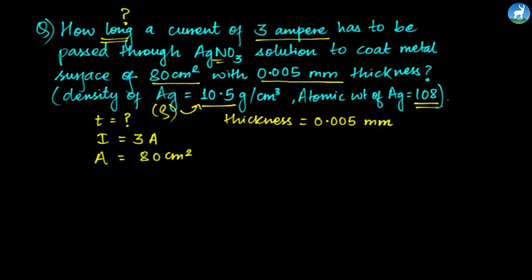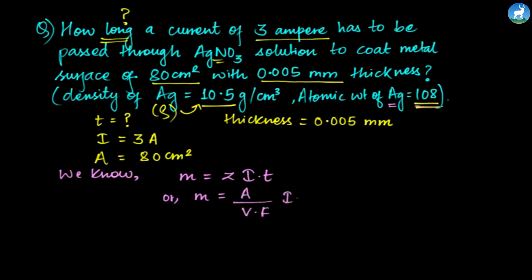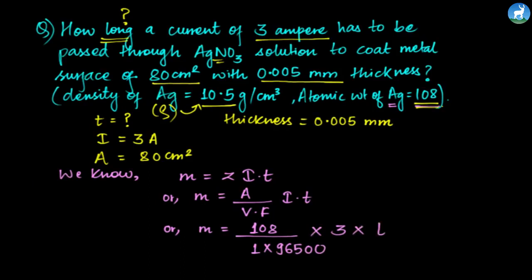Using Faraday's Law of Electrolysis, the basic formula is M equals ZQ, where Q equals I into T. So M equals Z into I into T, and further M equals atomic weight by valency into Faraday's constant, into I into T. Atomic weight is 108, valency is 1, Faraday's constant is 96,500, and current is 3 amperes. We need to find time T.